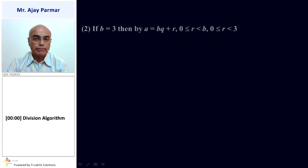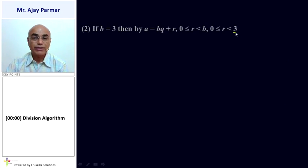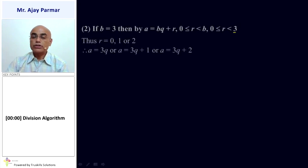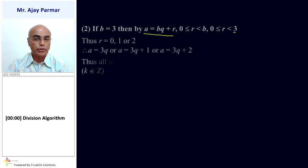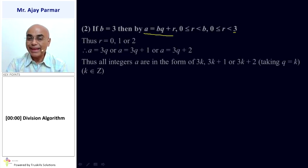Under the condition if B is equal to 3, then A is equal to BQ plus R. Substituting the value of B, we get zero is less than or equal to R less than 3. That means the values of R can be 0, 1, or 2. Substituting the values of R and B in the original expression A equals BQ plus R, we get A equal to 3Q, A equal to 3Q plus 1, or A equal to 3Q plus 2. Thus for all integers A, the forms are 3K, 3K plus 1, or 3K plus 2.